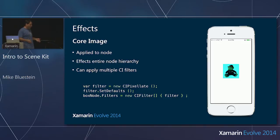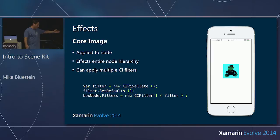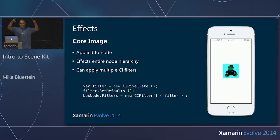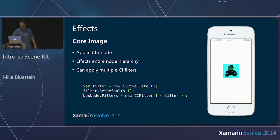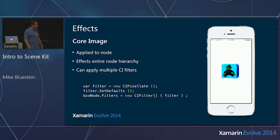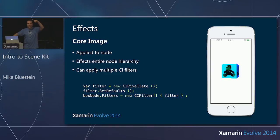It's everything you already know if you've worked with Core Image — you're just applying it to the node. And it affects the entire hierarchy of that node. So in this example, a couple lines of code and the same spinning box now pixelates. If I had ten nodes it would pixelate them all.